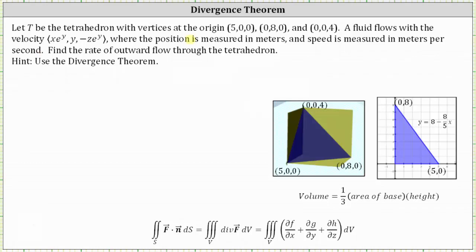Let T be the tetrahedron with vertices at the origin, (5,0,0), (0,8,0), and (0,0,4) as pictured below. A fluid flows with the velocity given by the vector field, where the position is measured in meters and the speed is measured in meters per second. We're asked to find the rate of outward flow, or outward flux, through the tetrahedron.